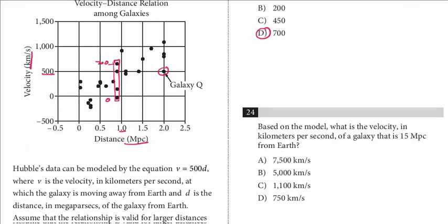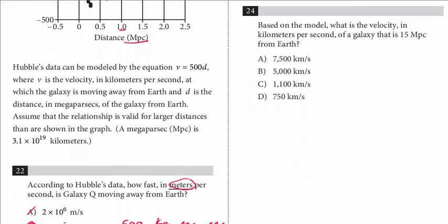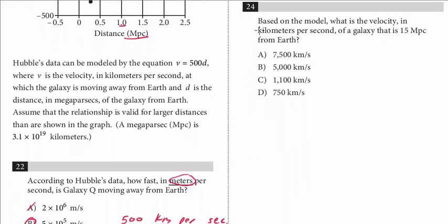And then we've got one more question, again, relating to this information. Based on the model, what is the velocity in kilometers per second of a galaxy that is 15 megaparsecs from Earth? And remember, we said that assume the relationship is valid for larger distances. And it only goes up to 2.5. But remember, we're given this model. That's really the key. You really have to pay attention to the information.